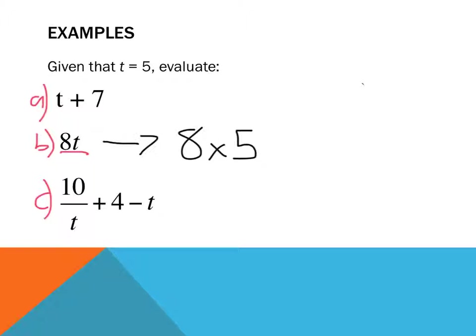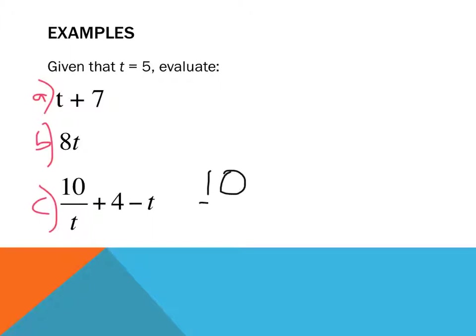Let's have a look at our next example. Oh, holy moly, that last one looks a little bit complicated, doesn't it? All I need to do is substitute in this algebraic expression and work it out. So, let's rewrite it: 10 divided by t, so t equals 5, plus 4 minus 5. Oh, my gosh. How do I know how to do this?